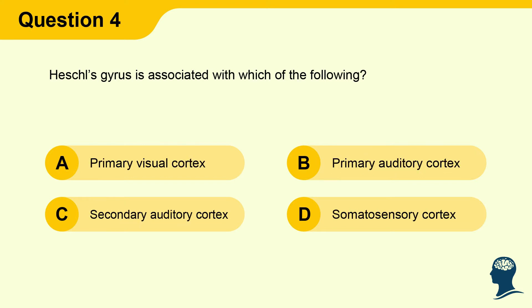Question 4: Heschl's gyrus is associated with which of the following? A) Primary visual cortex, B) Primary auditory cortex, C) Secondary auditory cortex, D) Somatosensory cortex.